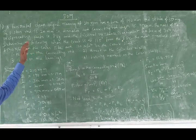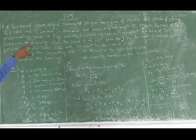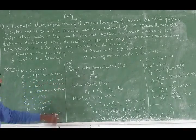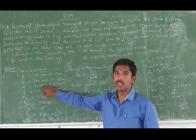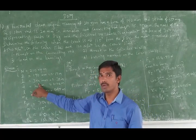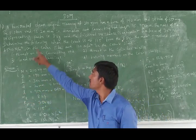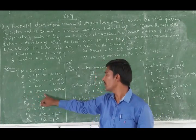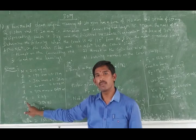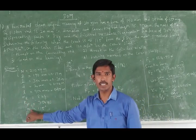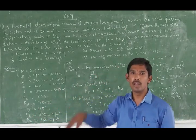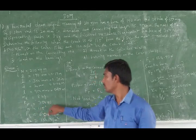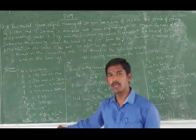Given data: speed 210 rpm, stroke length 350mm, so r equals 175mm. Connecting rod length L equals 953mm. Mass of reciprocating parts is 8 kg. Friction resistance equals 350 Newtons. Crank angle is 150 degrees from inner dead center. Pressures: cover side P1 and crank side P2 are given.